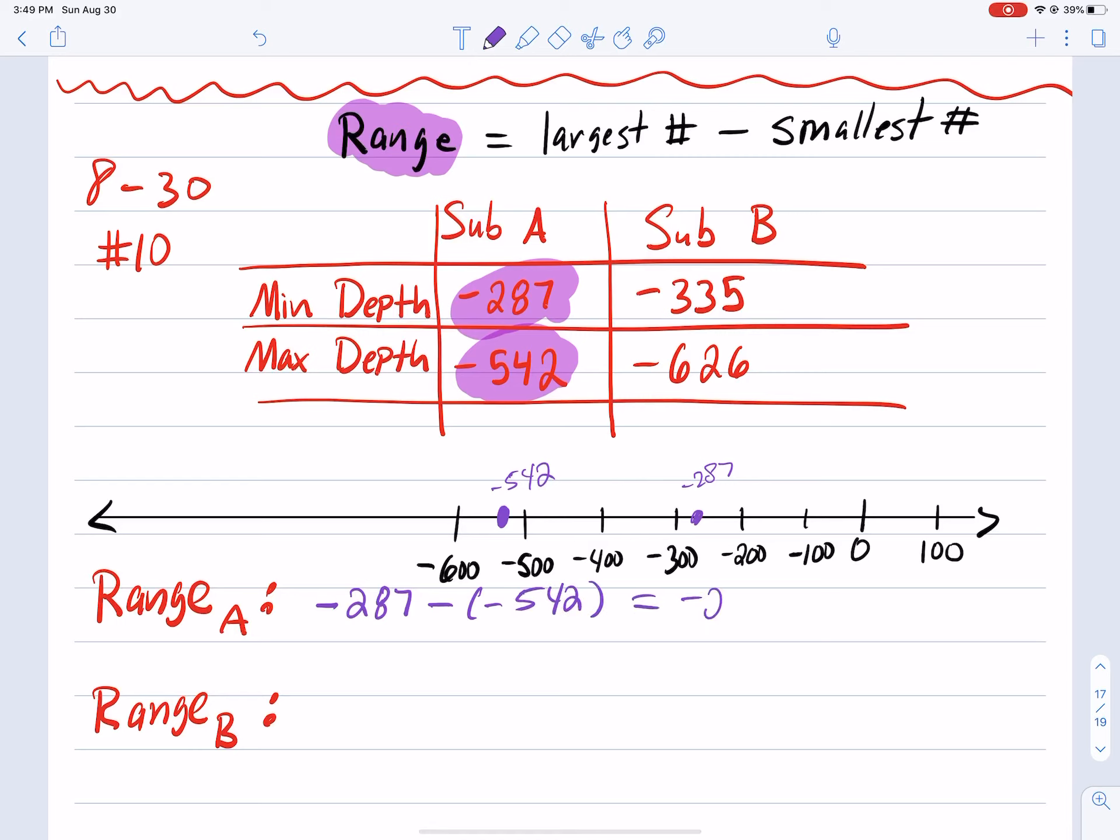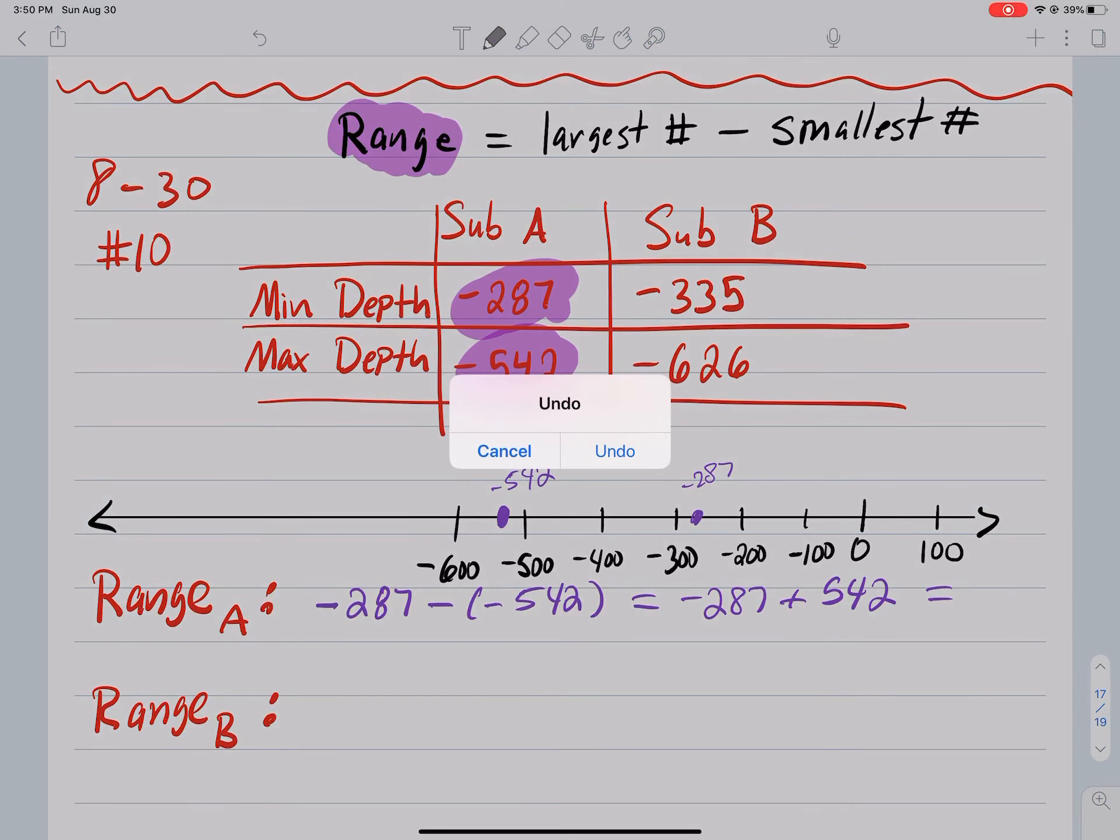So this becomes negative 287 plus 542, remember the rules of subtraction add the opposite. And now these are different signs and so when you subtract these you end up with this number. 542 plus negative 287.